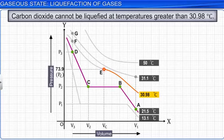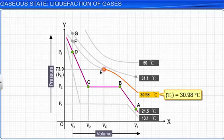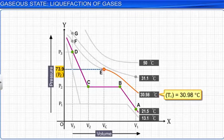So, the critical temperature of carbon dioxide was found to be 30.98 degrees Celsius, while the critical pressure, Pc, is 73.9 atmospheric pressure, and the critical volume is 95.6 millilitres.